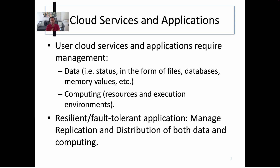Cloud services and applications in general require managing both data and computing. Data is typically in the form of files, databases, and memory values, while computing refers to the resources and execution environments required to process that data. To achieve high availability and fault tolerance, you need to manage both replication and distribution of that data and computing. Replication means several components doing the same thing, while distribution is the potential separation of these components in a geographically distributed manner. Both replication and distribution are key elements for fault tolerance.